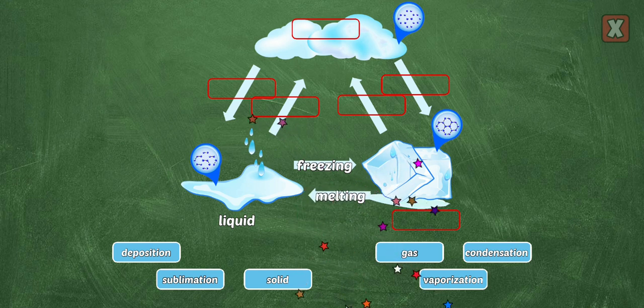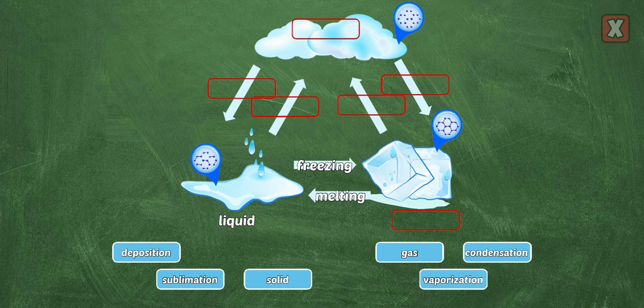Melting is when a solid turns into a liquid. When heat is added, the molecules move faster.